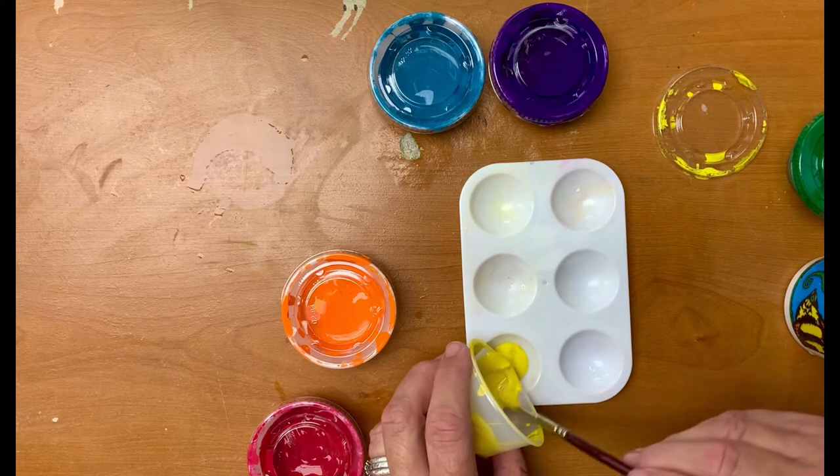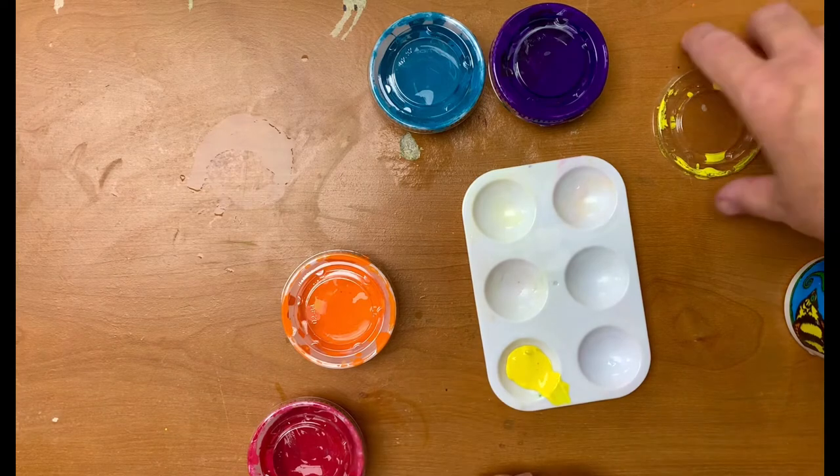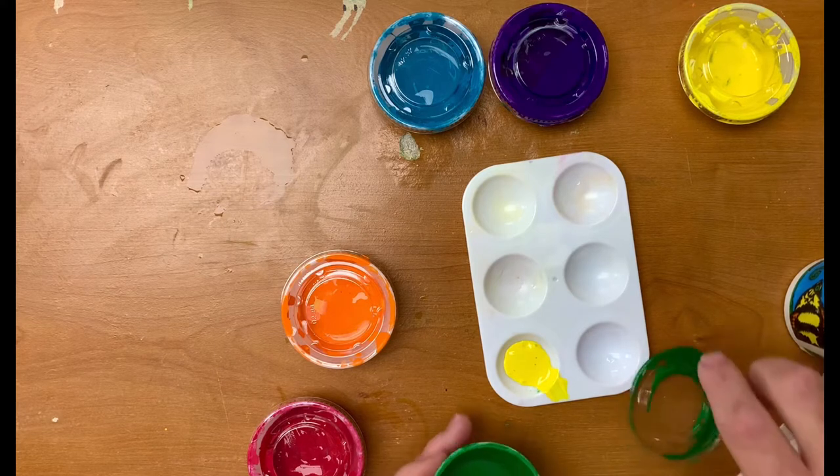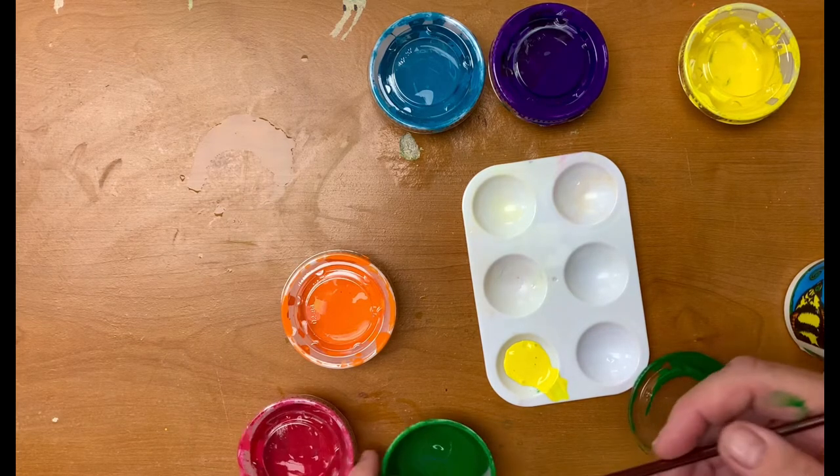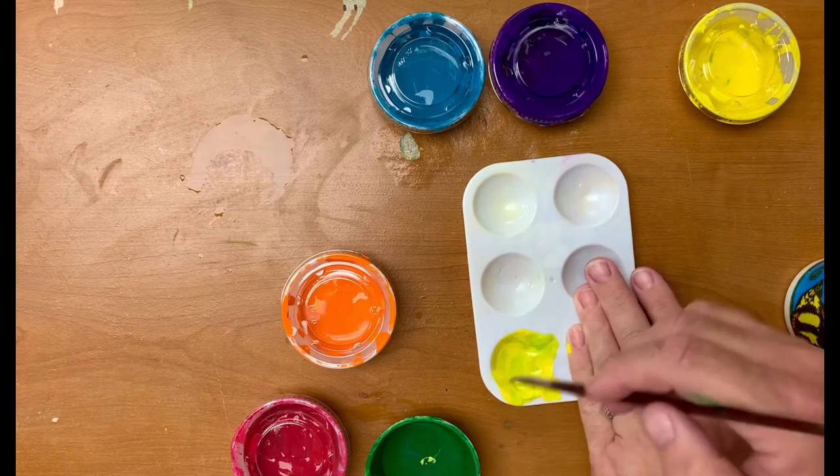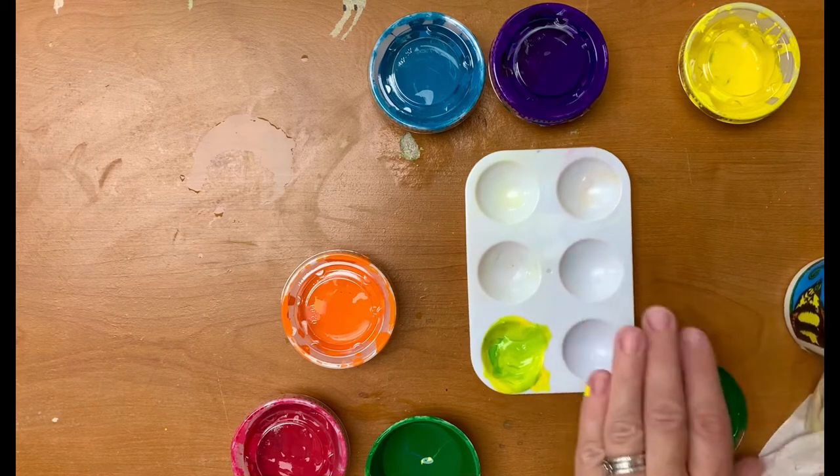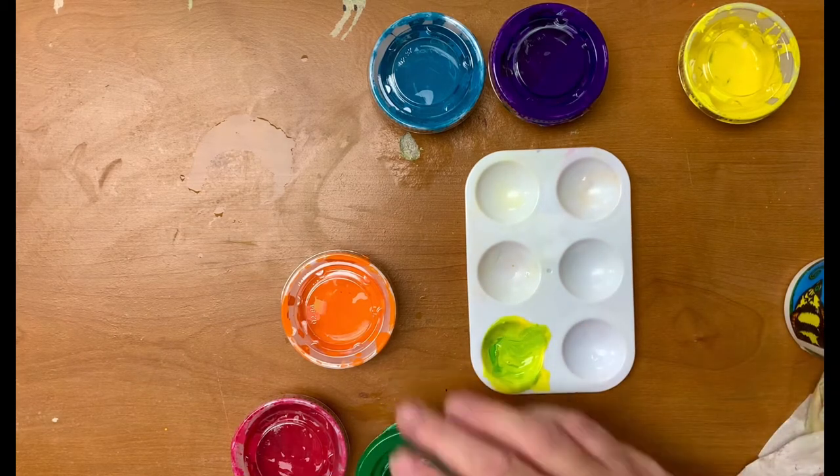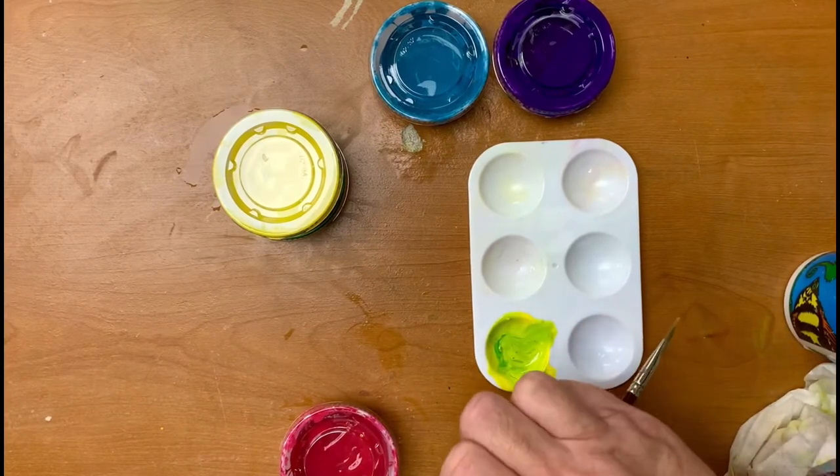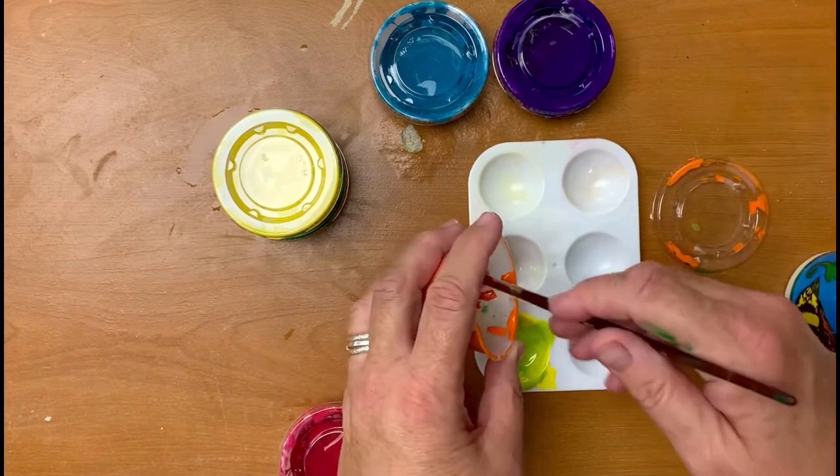So it'll get overpowered quickly. We start with our yellow and then we'll add a little bit of our green until we get the yellow green that we would like. Next we'll mix our red orange.